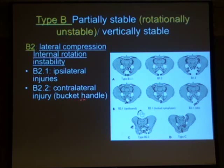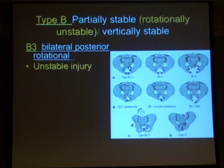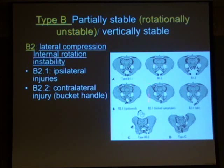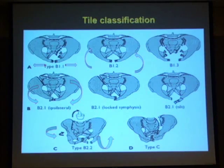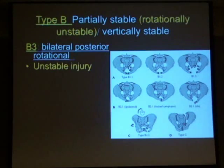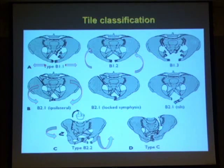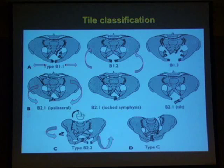The bucket-handle type injury involves an injury to one side of the pelvis at the back and the other side at the front, and this whole hemipelvis can move up and down like a bucket-handle. The B3s are the bilateral posterior injuries and are pretty unstable. Here is the schematic representation of the Tile classification.